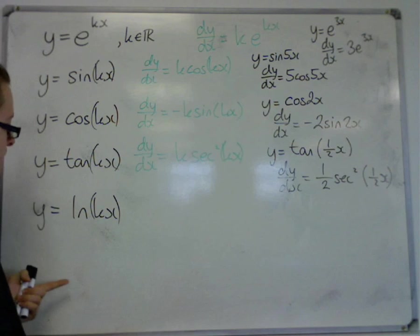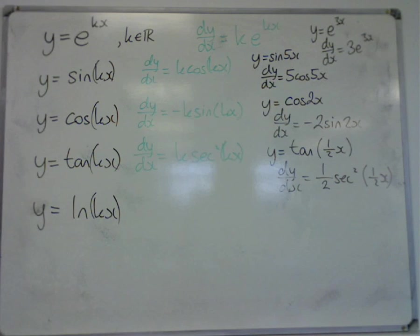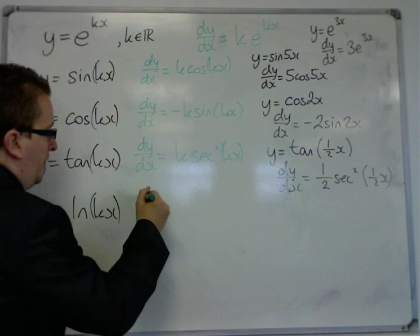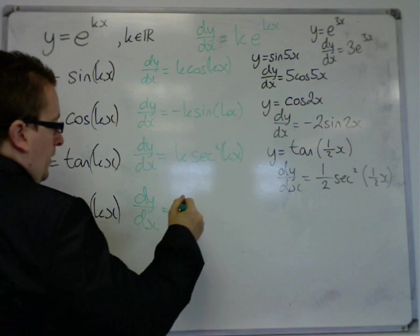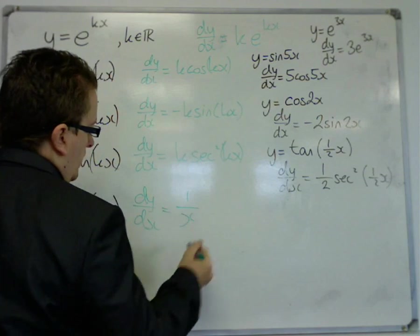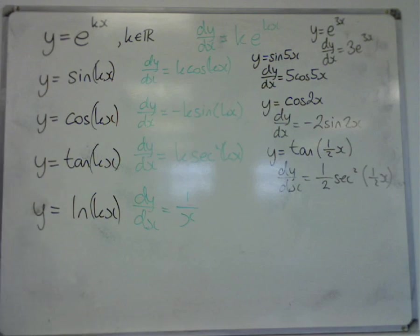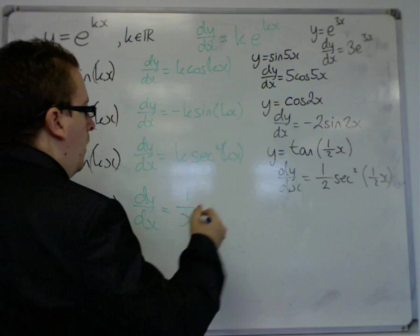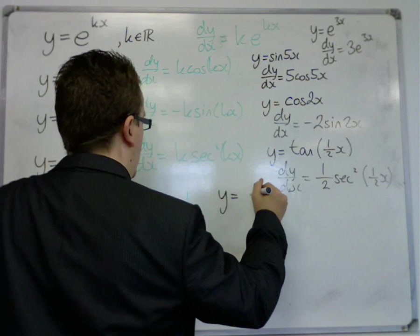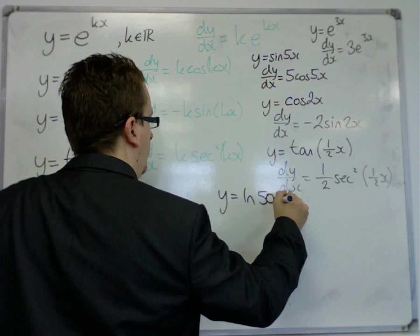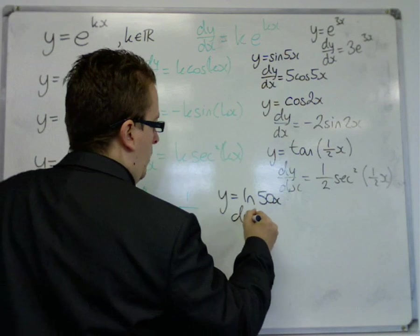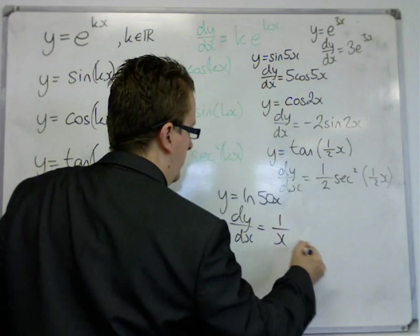And finally, this one is a slightly more interesting result. dy by dx of this is just 1 over x, regardless of the value of k. So, y equals log of 50x, for example, dy by dx is equal to 1 over x.